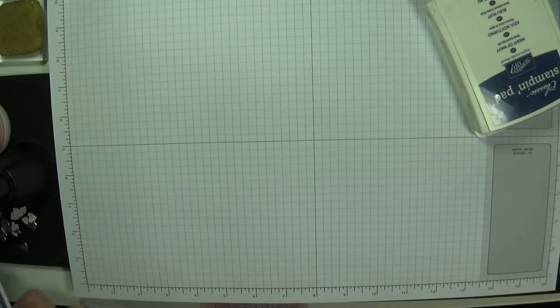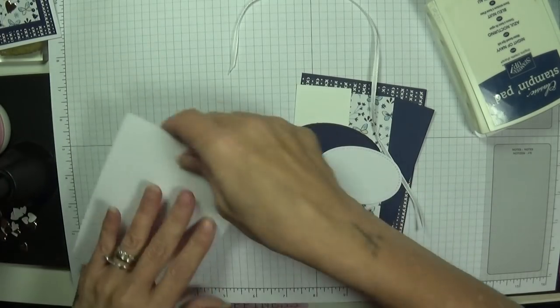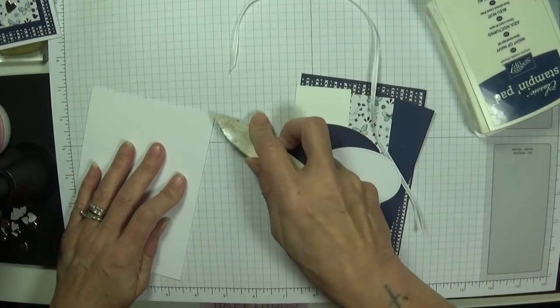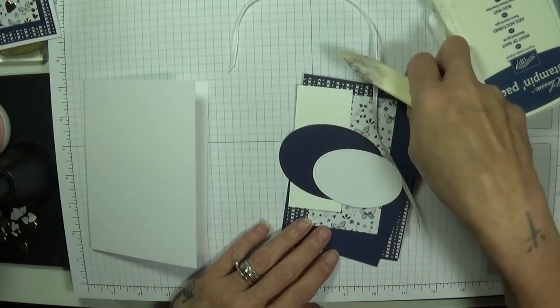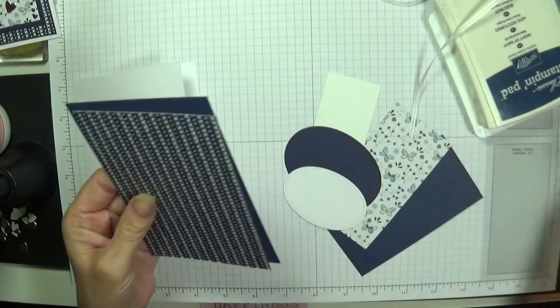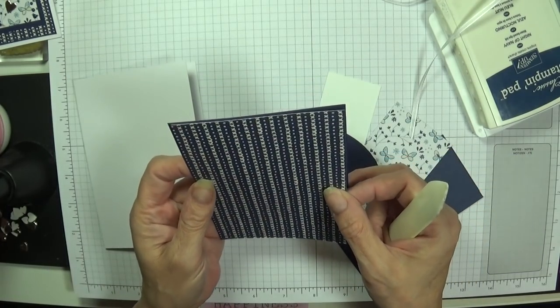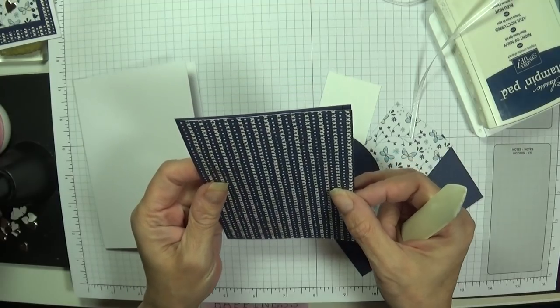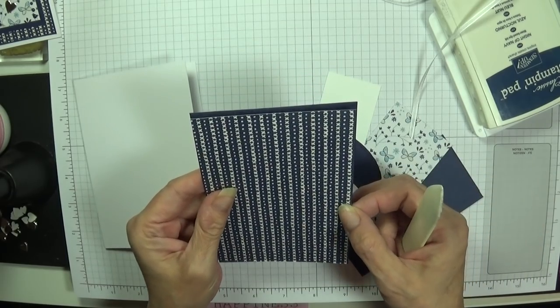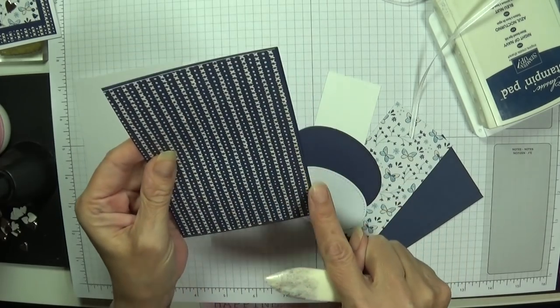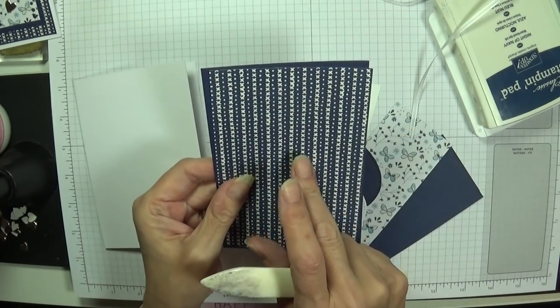So the only stamping really is on the inside, on our oval and this panel here. I could have just added another piece of designer series paper but why not stamp something yourself instead of little shortcuts. So the pieces you will need for this card are, I'm using thick whisper white, which is eight and a quarter by five and seven eighths, scored and folded at four and one eighths.